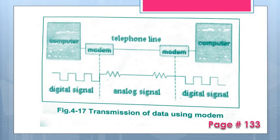If you look at page 133, there is a picture showing two computers. There is a telephone line between these two computers. When information is sent from one computer, the modem converts the digital signals into analog signals for transmission over the telephone line. On the receiving end, those analog signals are converted back into digital signals.